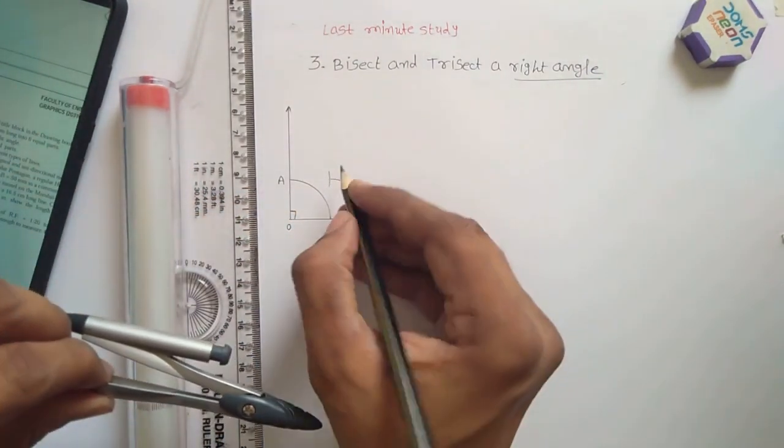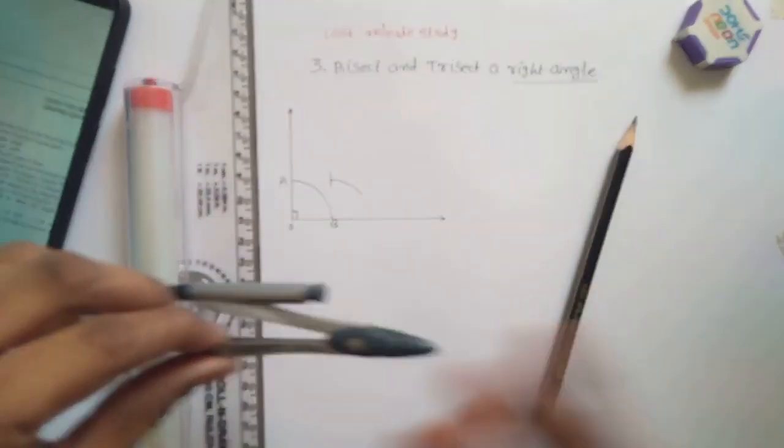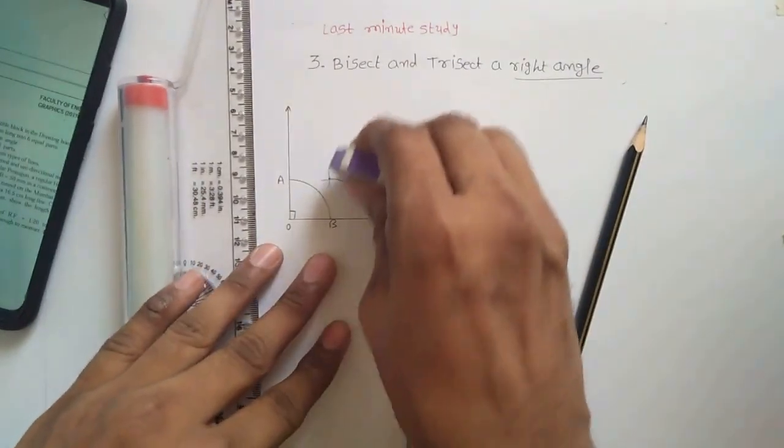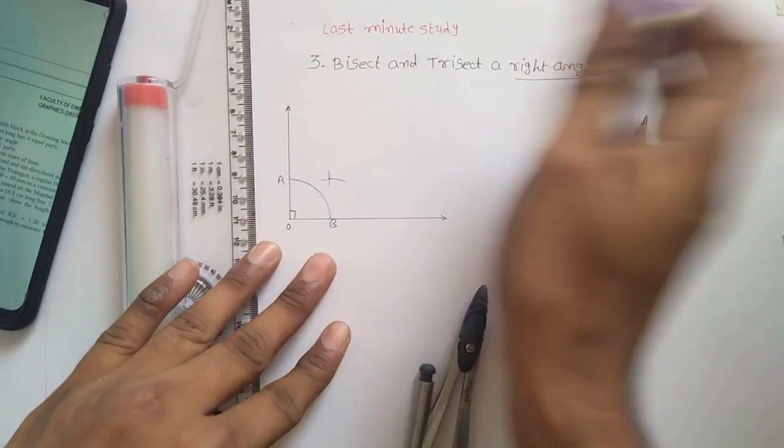You got your intersecting point like this. So this is your intersecting point. Make it a little bit proper and erase excessive arcs like this.